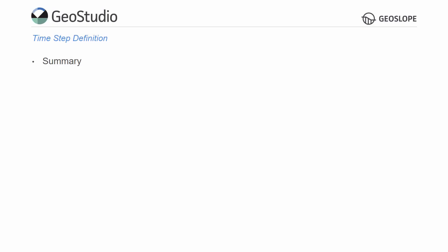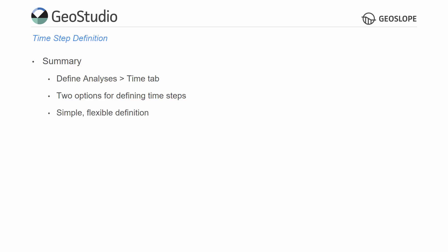In summary, the Time tab in the Define Analyses dialog allows for the modification of the timesteps for transient analyses. Two options are available for defining the timesteps, as either the number of steps or the time increment size may be entered. This provides a simple, flexible method for defining the timesteps.